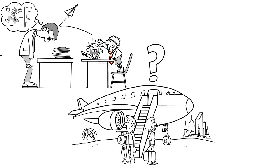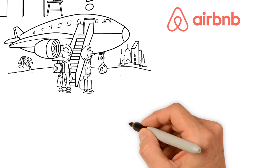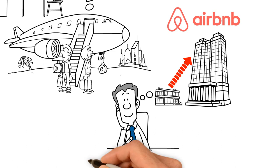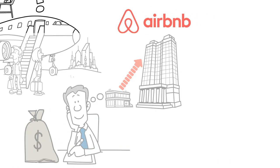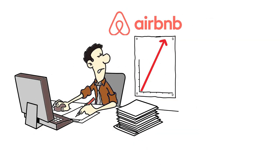So what's causing this downfall? Some say Airbnb's rapid growth has caused a lack of quality control, leading to unscrupulous hosts and guests taking advantage of the platform. Others believe the company's focus on profits has overshadowed its commitment to its community. Whatever the reason, it's clear that Airbnb needs to step up its game if they want to stay in the game.